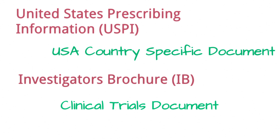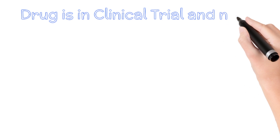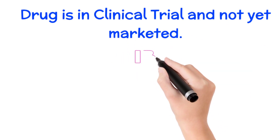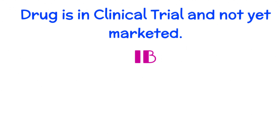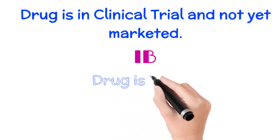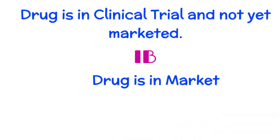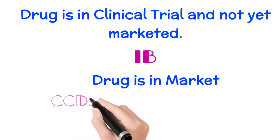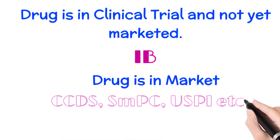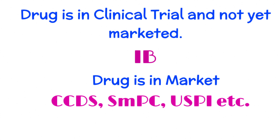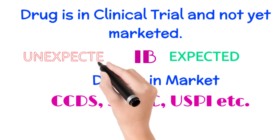Which document should we use for labelling any serious or non-serious adverse event? If we receive any adverse event report for a drug which is in a clinical trial and not yet marketed, we will use the Investigator's Brochure for labelling of the event. And if we receive any adverse event report for a drug which is available in the market, we will use CCDS, SmPC, USPI, etc. for labelling of the event. If the event is reported in the Investigator's Brochure, then that event is an expected event; if not reported, then it is an unexpected event.